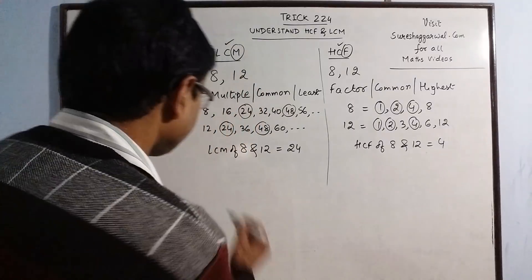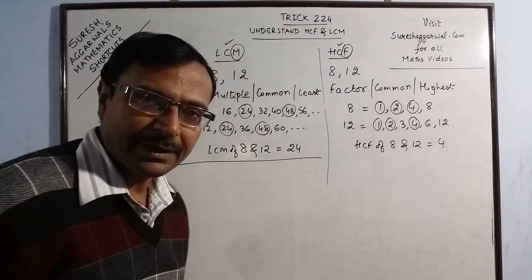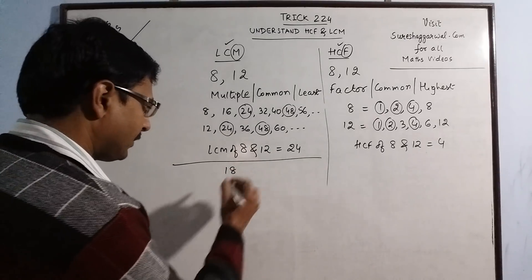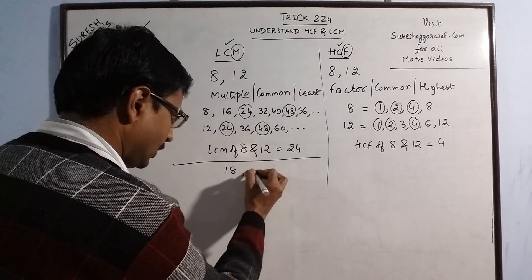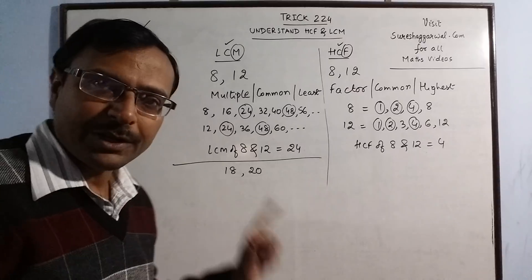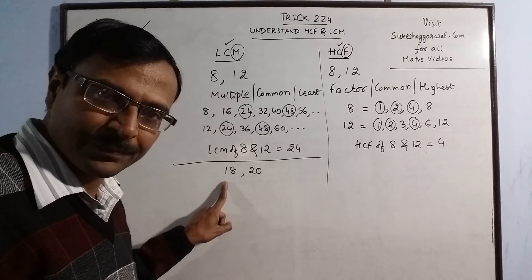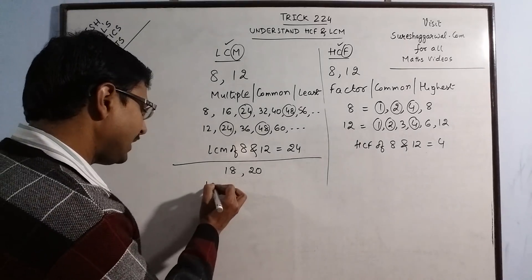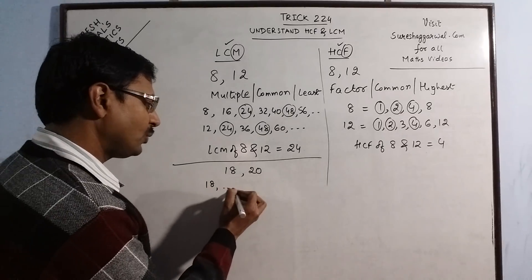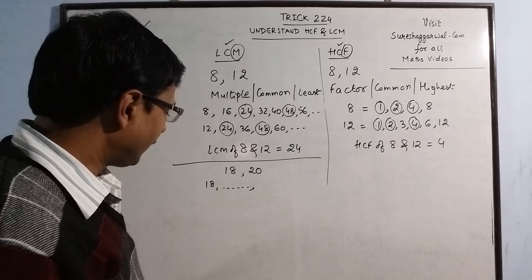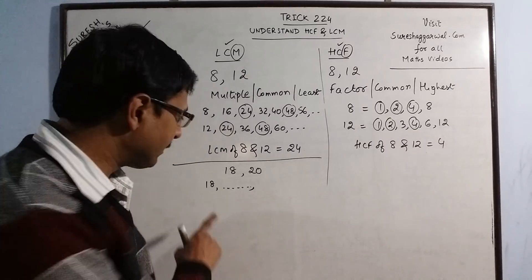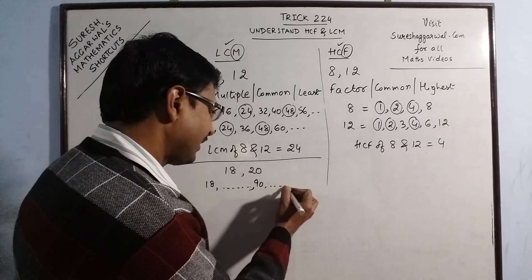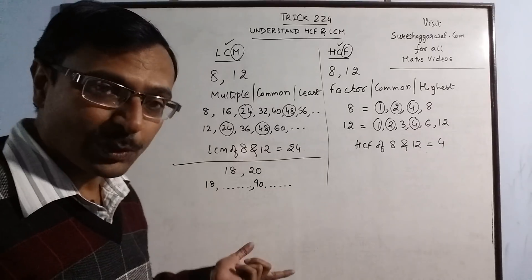Now see I have not taken any method for finding the LCM, just the understanding of what is LCM. Now let us take one more example. Now suppose you have to find the LCM of 18 and another number say 20. Now for 18 and 20, you need to write the table of 18. And if you have understanding of tables, you will realize that in 18, you will carry on writing this table but you will not get a 0 in the units place until you multiply this by 5.